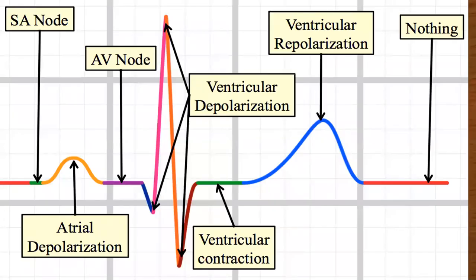Here's what your EKG strip looks like when that's happening. You see your SA node fires, then it writes your P wave, which is your atrial depolarization. Then it travels to the AV node and on to the ventricle where it writes your QRS, causing ventricular depolarization. Then it travels on to write the T wave when the ventricles relax.